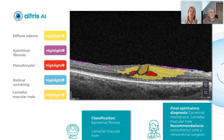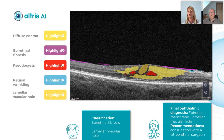In the classification, AI detected that the diagnosis might be epiretinal fibrosis and lamellar macular hole. After that, this patient was referred to an ophthalmologist, and after all the examinations and investigations, the final ophthalmic diagnosis was epiretinal membrane and lamellar macular hole.